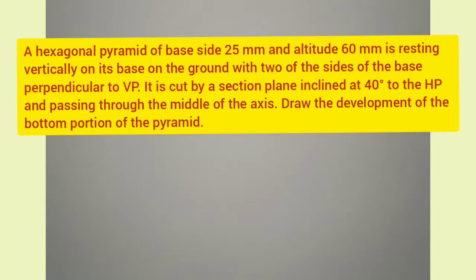Hi all, in this video we are going to draw the development of a hexagonal pyramid. The question is: a hexagonal pyramid is resting vertically on its base on the ground with two of the sides of the base perpendicular to VP. It is cut by a section plane inclined at 40 degrees to the HP and passing through the middle of the axis. Draw the development of the bottom portion of the pyramid.